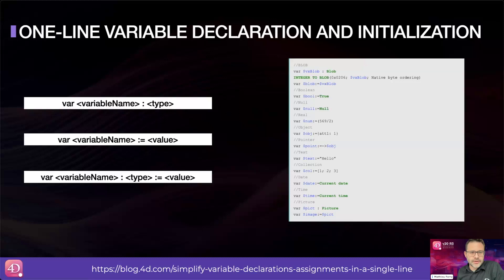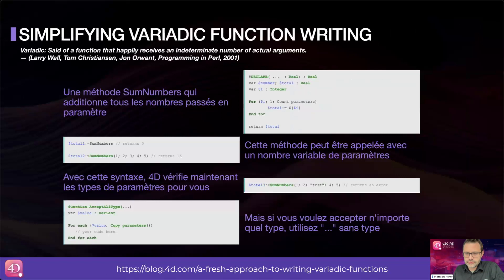You have here several examples of how you can declare a variable: the first line with a type, the second line only with a value where the type will be determined by 4D, and on the last line you specify both type and value. That's it for this new feature. You can consult the blog, the link is shown below.